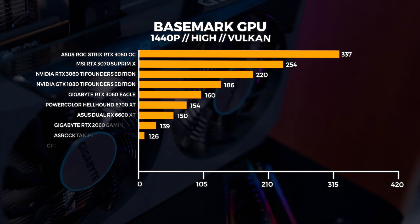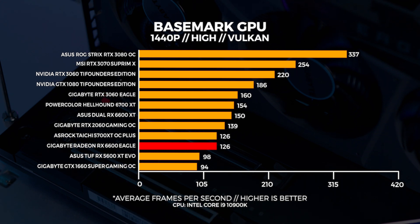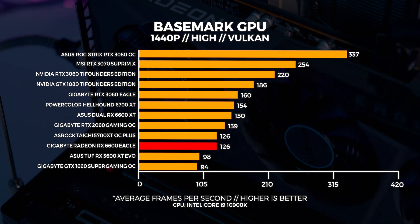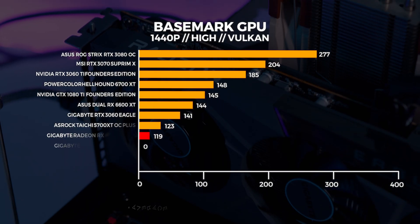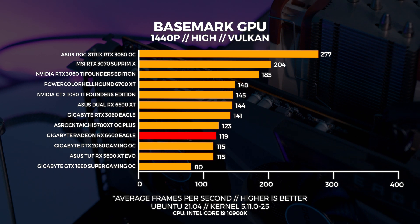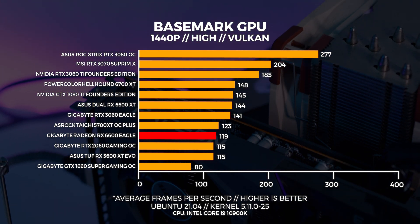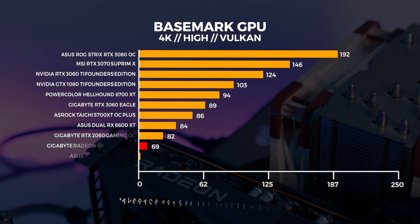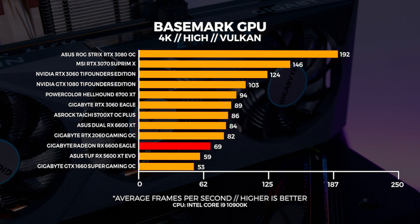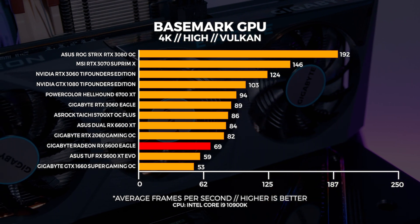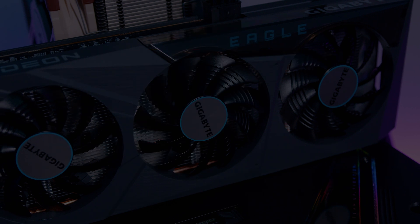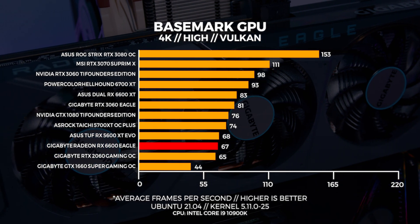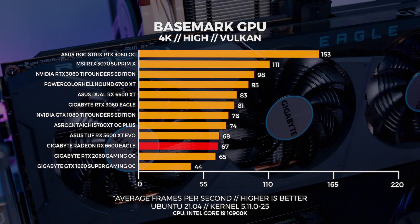At 1440p in Windows the test is more predictable and the 6600 actually ends up equaling the performance of the older 5700 XT. In Linux at 1440p we're seeing the 6600 slightly outpace the 2060, which is a bit of a surprise. At 4K in both Windows and Linux we're seeing the same trend as 1440p, with Windows coming out on top but the gap slightly closing. The 6600 and the 2060 are trading blows at every single opportunity.